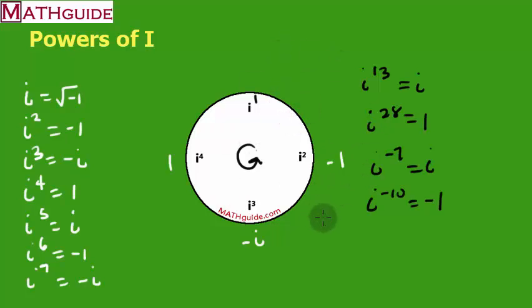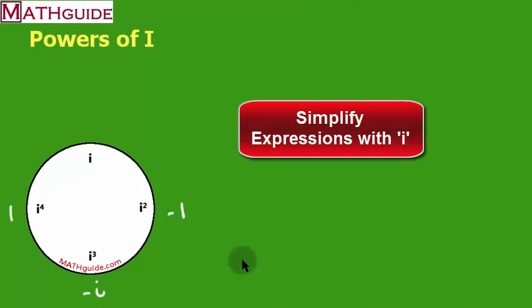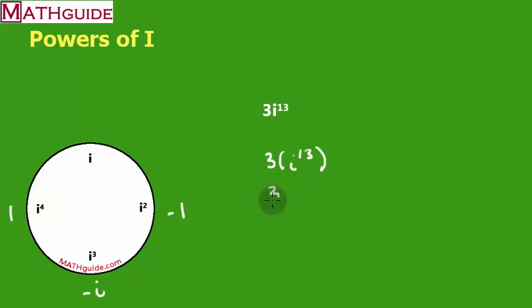Now we'll simplify expressions with i. We have 3i to the thirteenth. We look at the power of i separately: i to the thirteenth, counting around the wheel — first, second, third, fourth... thirteenth lands on i. So i to the thirteenth is just i. Therefore, 3 times i is 3i.